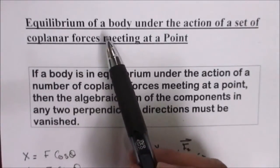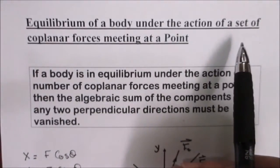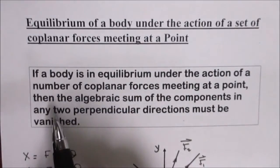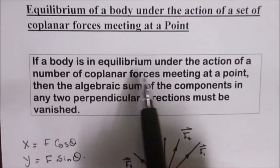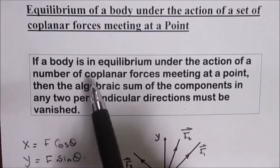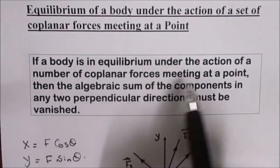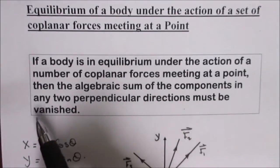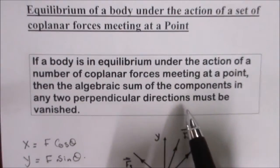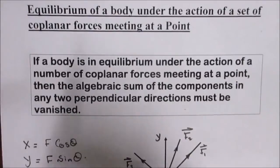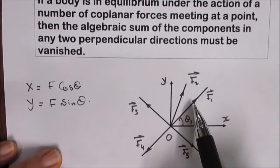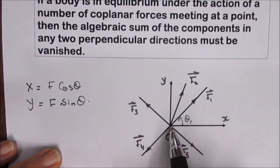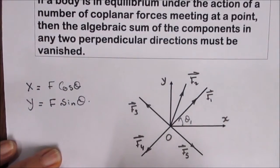In this video, we're going to take the equilibrium of a body under the action of a set of coplanar forces meeting at a point. Important rule: if a body is in equilibrium under the action of a number of coplanar forces meeting at a point, then the algebraic sum of the components in any two perpendicular directions must vanish. Here we have a set of coplanar forces meeting at point O and acting on a body in equilibrium.